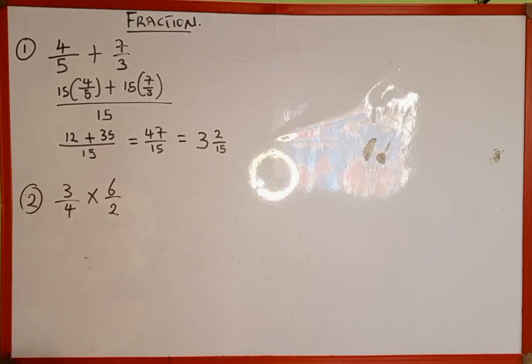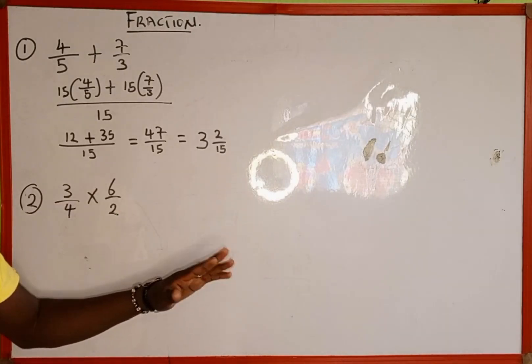Look at example 2, which is multiplication of fractions. When you are given two fractions and asked to multiply, since it's multiplication, we are not going to find any LCM.